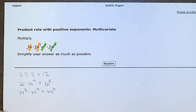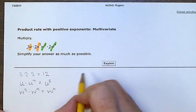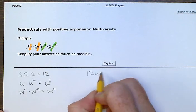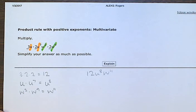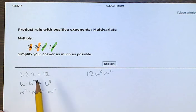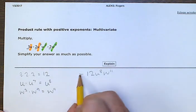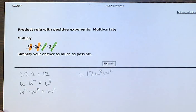So now that we have these three parts, we can just multiply them together. We do that just by writing them next to each other. That means multiplying. So we did all the numbers, we did all of one variable and then all of the other variable. And that gave us our answer: 12u to the 8th, w to the 11th.